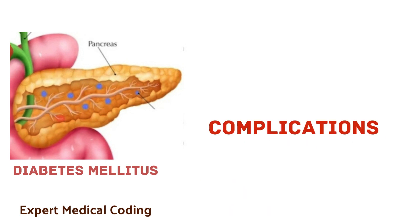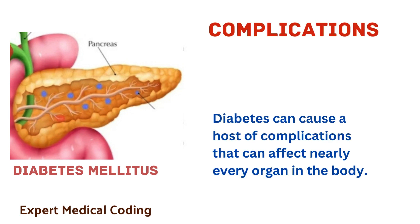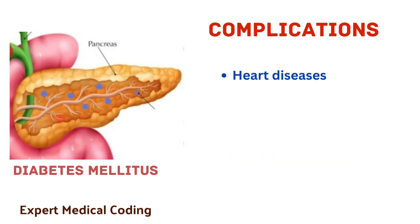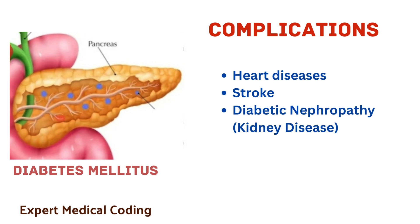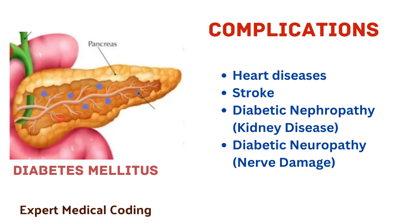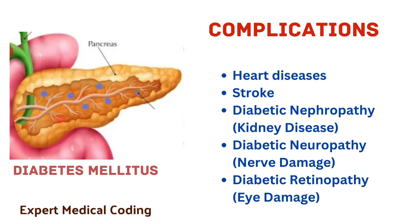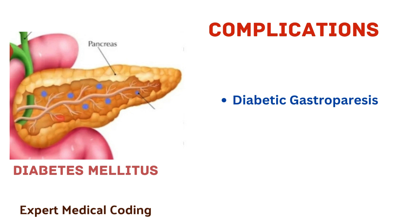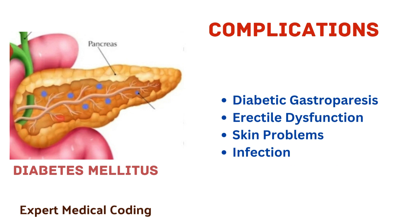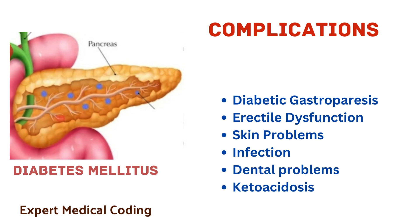Now let us discuss about the complications. Diabetes can cause a host of complications that can affect nearly every organ in the body. The complications are heart diseases, stroke, diabetic nephropathy (kidney disease), diabetic neuropathy (nerve damage), diabetic retinopathy (eye damage), diabetic gastroparesis, erectile dysfunction, skin problems, infection, dental problems and ketoacidosis.